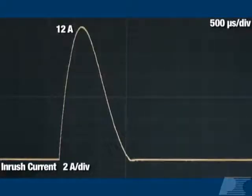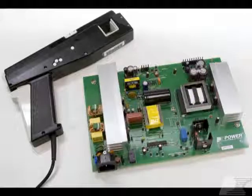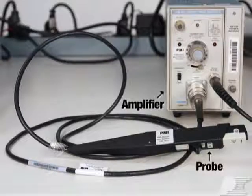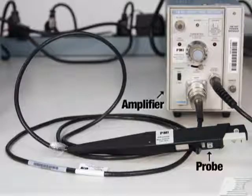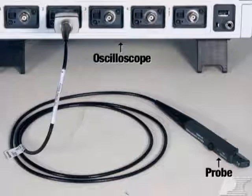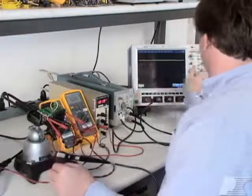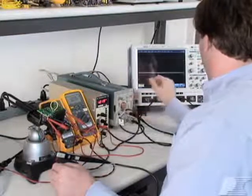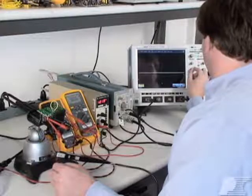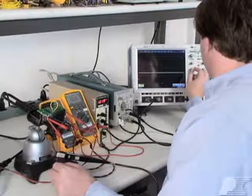However, when measuring peak inrush current at startup or when working with higher power designs, it may be necessary to select a higher rated probe to achieve accurate results. DC current probes are active devices that use a Hall effect sensor to measure both AC and DC currents. They require a matching probe amplifier, which may be a standalone unit, but for newer scopes is often built in. AC current probes are simply current transformers and don't require a probe amplifier, but they can't measure DC current levels. DC current probes are better for power electronics work because they can be used for a wider range of measurements. For instance, a DC current probe can be used to measure and characterize your load or to measure inductor currents and other topologies, such as buck converters.